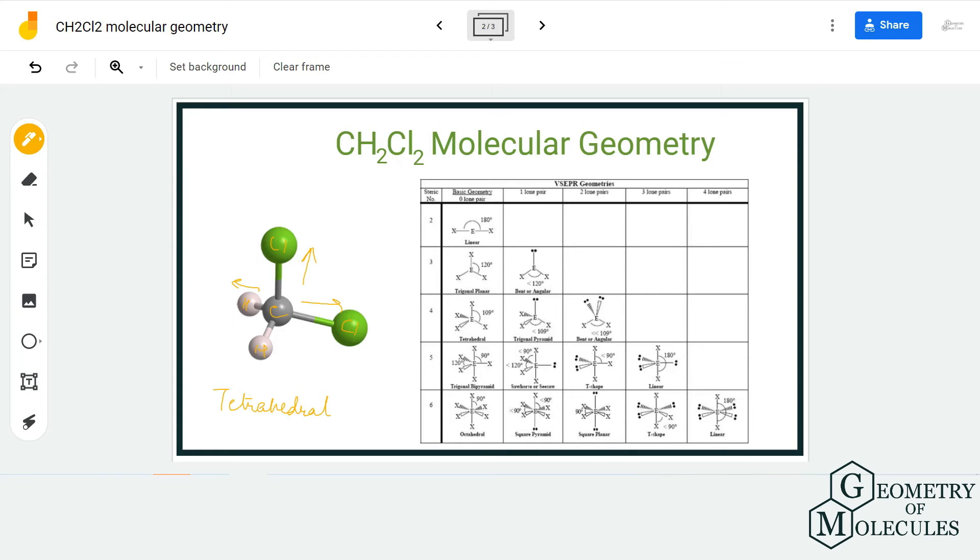For CH2Cl2, we are going to use the formula of steric number and find out its molecular geometry. The steric number of carbon over here would be four because it is forming four bonds with four atoms and there are no lone pairs.